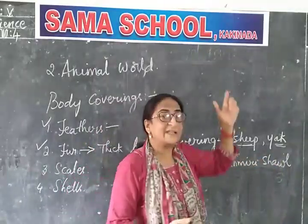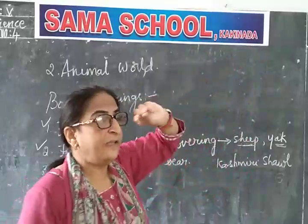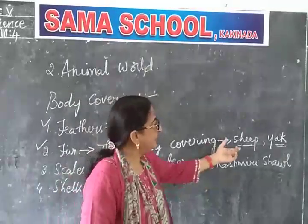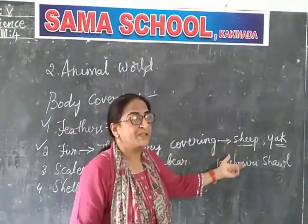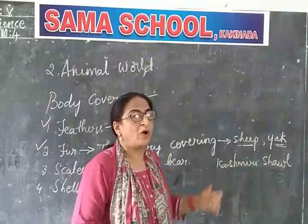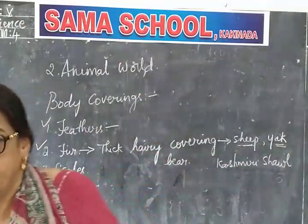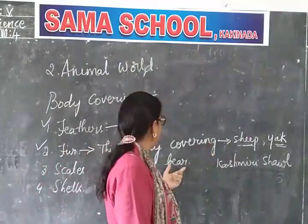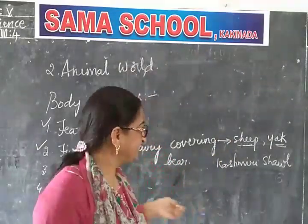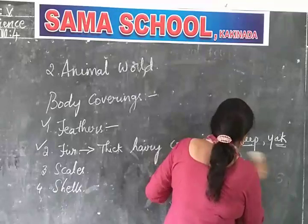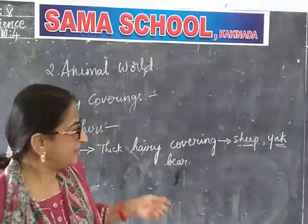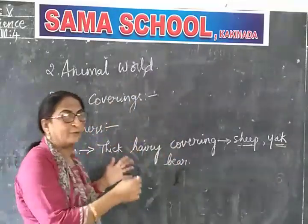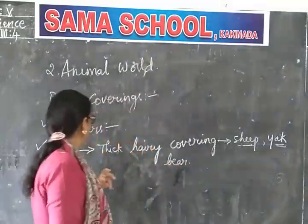Moreover, these fine quality Kashmiri shawls are also exported to other countries. In this way, the fur of the sheep — which is made into wool and out of which warm clothes are made — is very famous. So fur is one of the important body coverings of animals like sheep, yak, and bear. They also protect from cold and rain, and are found in animals living in mountain ranges.